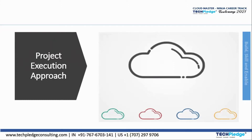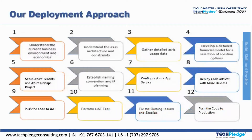Welcome back. We'll start with the next module: project execution approach. Here I want to let you know how our deployment approach will work. We will be going through 12 steps when we think about project execution. The first is to understand the current business environment and economics. After that, you have to understand the assets, architecture, and constraints.